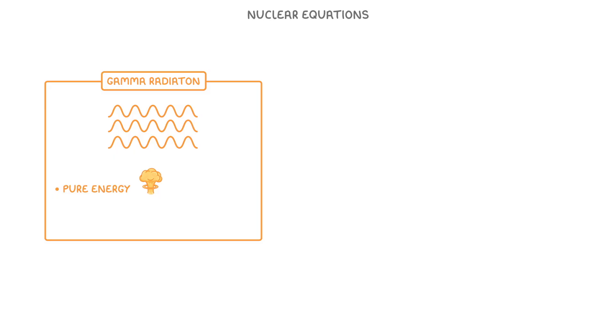The easiest type of radiation to show is gamma radiation. Because gamma radiation is pure energy and doesn't have any mass or charge, it doesn't change anything.